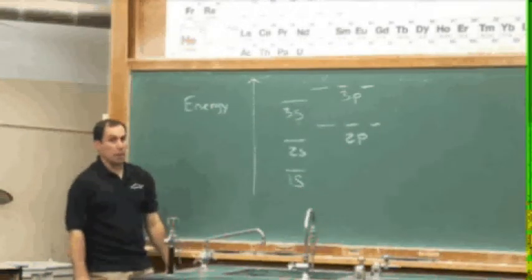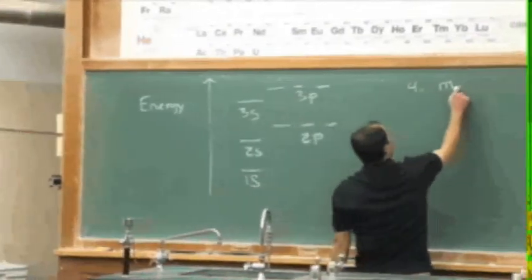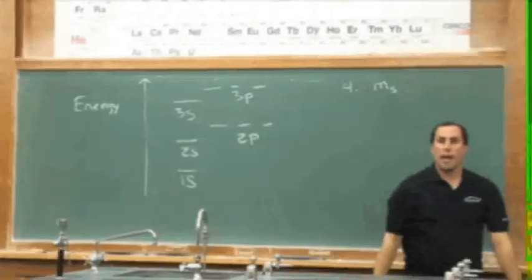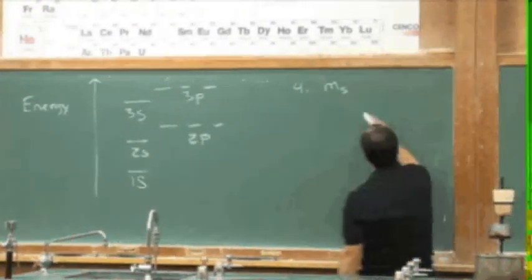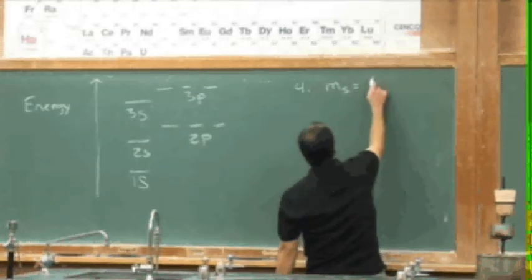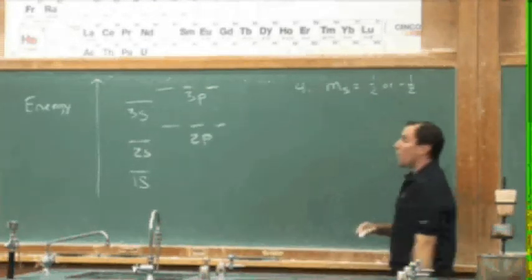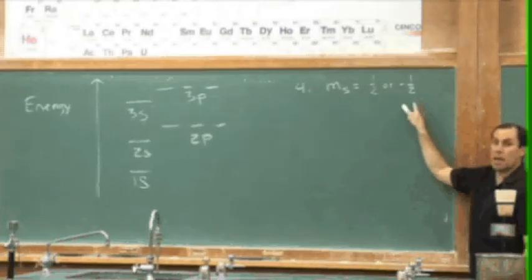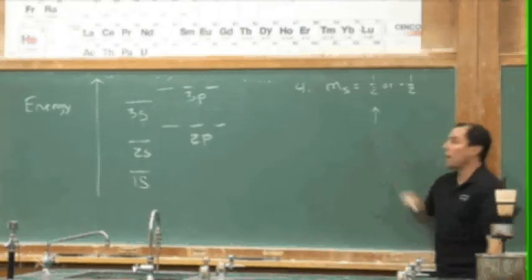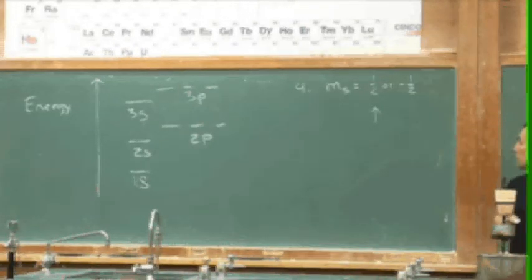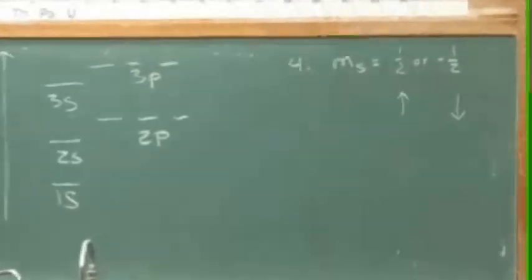It turns out that there's a fourth quantum number. I'll go up to the right side here, number four, and it's the spin. And an electron can have a spin up or a spin down. We usually represent this by saying m sub s can equal one half or negative of one half to indicate one spin and the other spin.